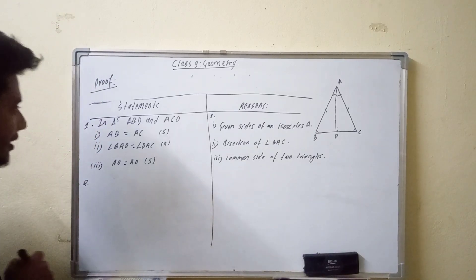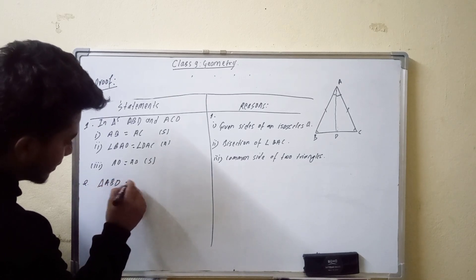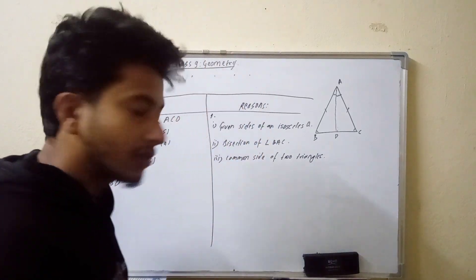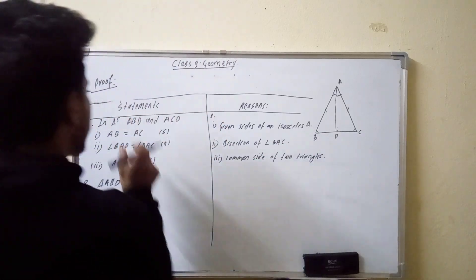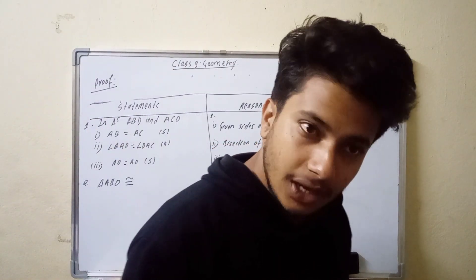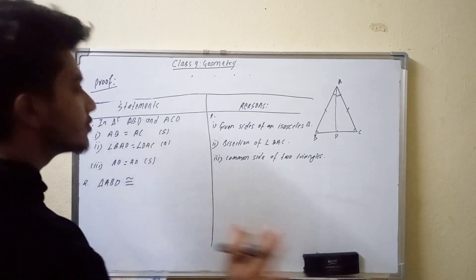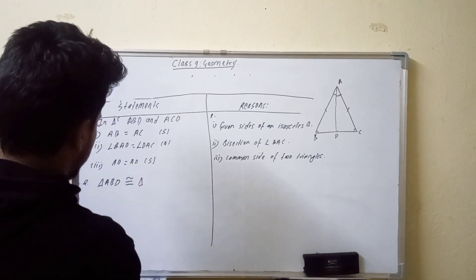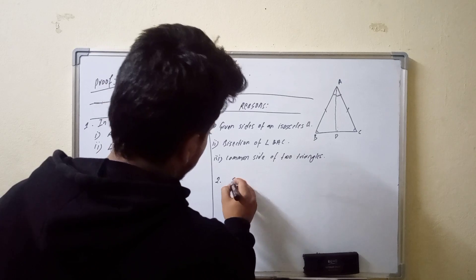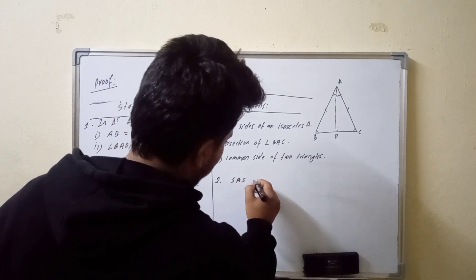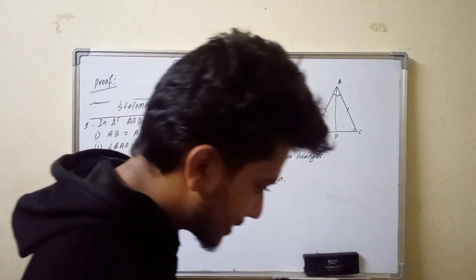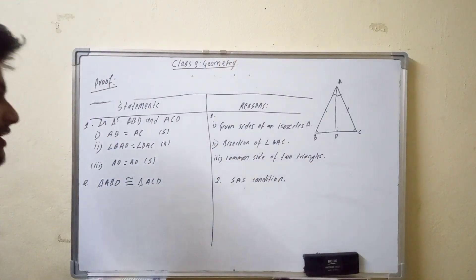Second number statement: triangle ABD is congruent to triangle ACD. The reason is the SAS condition — side-angle-side. The SAS condition is satisfied with these triangles. Therefore the remaining angle is the same.